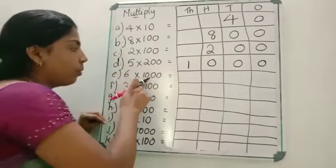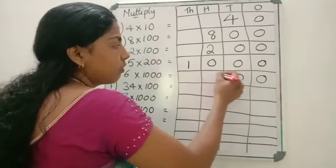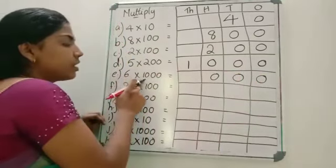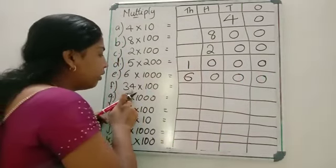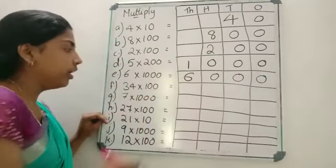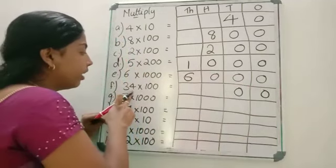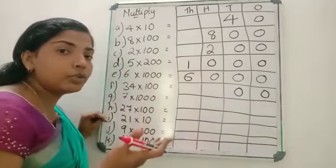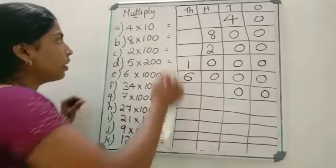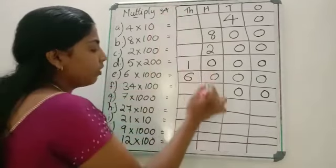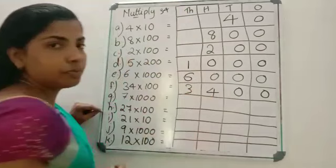Next: 6 into 1000. How many zeros are here? 3 zeros. So put 3 zeros starting from the 1's place. Then 6 into 1 is 6, so the answer is 6000. Next: 34 into 100. How many zeros? 2 zeros. Put those 2 zeros first. Then 34 into 1 — any number into 1 is that number itself, so 34. Write 4 in the 100's place and 3 in the 1000's place, giving 3400.